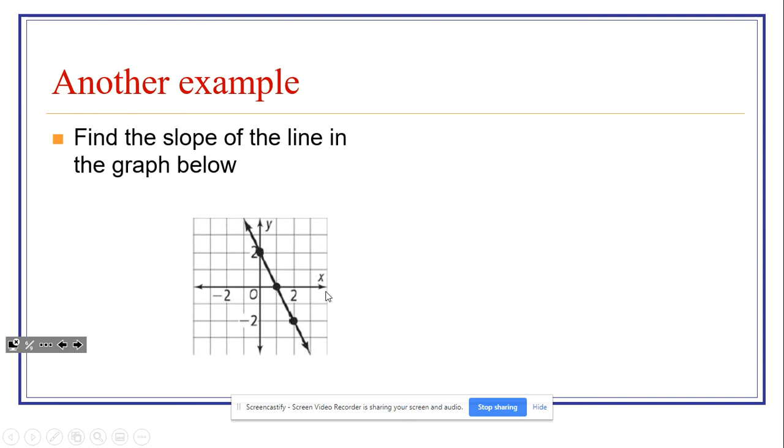Here's another example for you to try. Pause the video at this point to give yourself a chance to try it on your own. So there are a couple of different ways that we can do this particular example. We can still use our formula, because we know that this point here is 0, 2. And we know this point here is 1, 0.